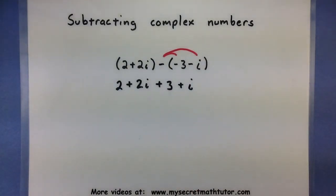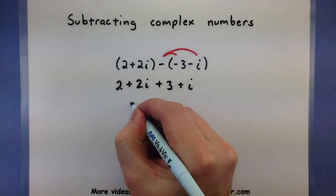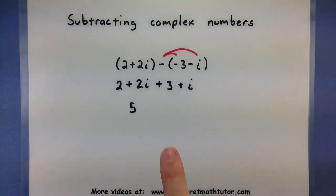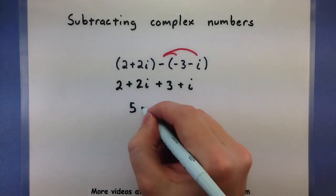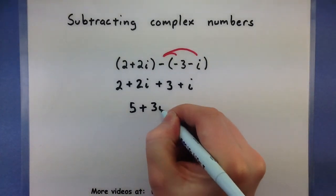And then I can run through this and just combine my like terms. So combine the 2, combine the 3, and this will give us a 5. Combine the 2i and the 1i, and this will give us 3i.